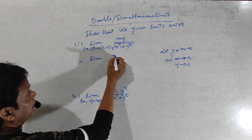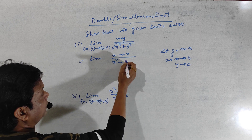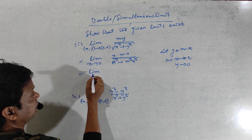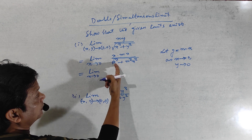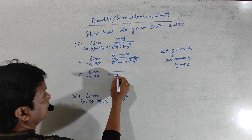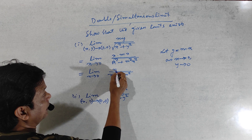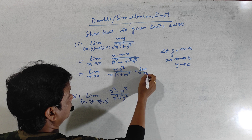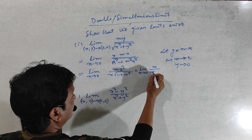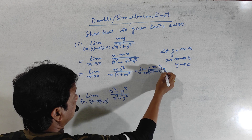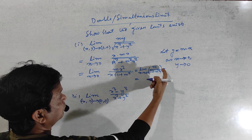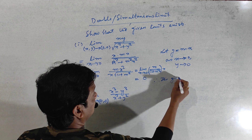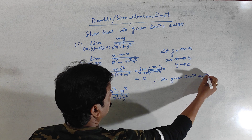Now take the limit as x tends to zero, with y equal to mx, of the expression: x times mx divided by the square root of (x² + m²x²). This becomes: limit as x→0 of x² times m divided by x times the square root of (1 + m²). After cancelling x, it becomes: limit as x→0 of m divided by √(1+m²) times x. Putting x equal to zero, zero times something is zero. Hence the given limit exists.